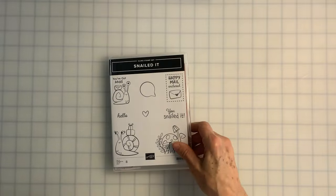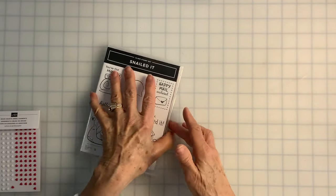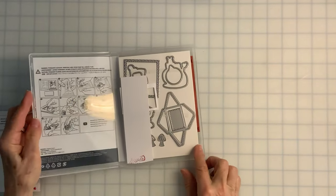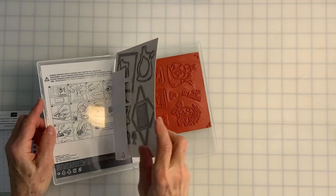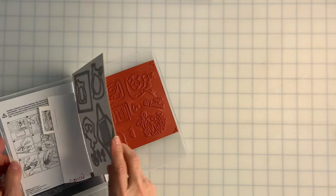The supplies we'll need for making this card today are, of course, this Snailed It stamp set, and the dies I keep inside the stamp case, making sure that my blades are away from the stamps to protect them from damage.